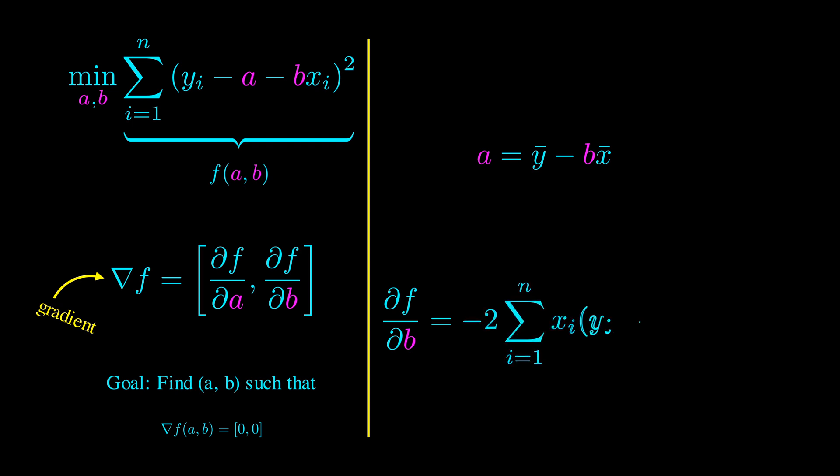Next, we take the derivative of f with respect to b, and set it equal to zero. We have two equations and two variables, so we can solve for b. I'll skip the tedious algebra, so you'll have to just trust me that we can ultimately write b as the following formula.